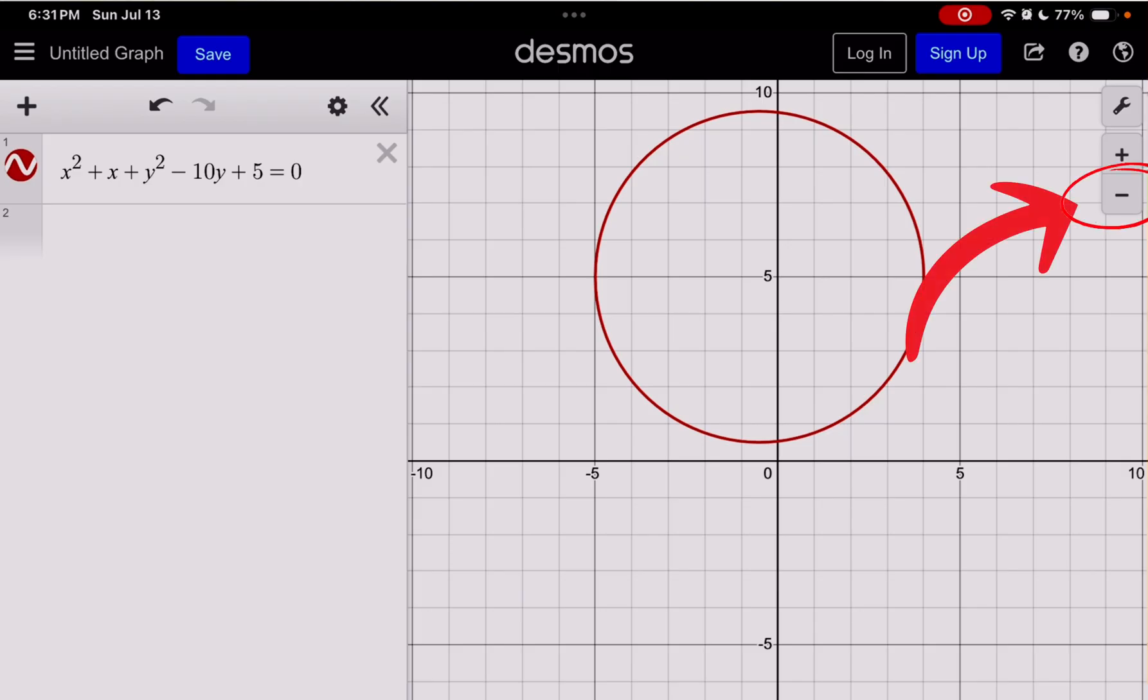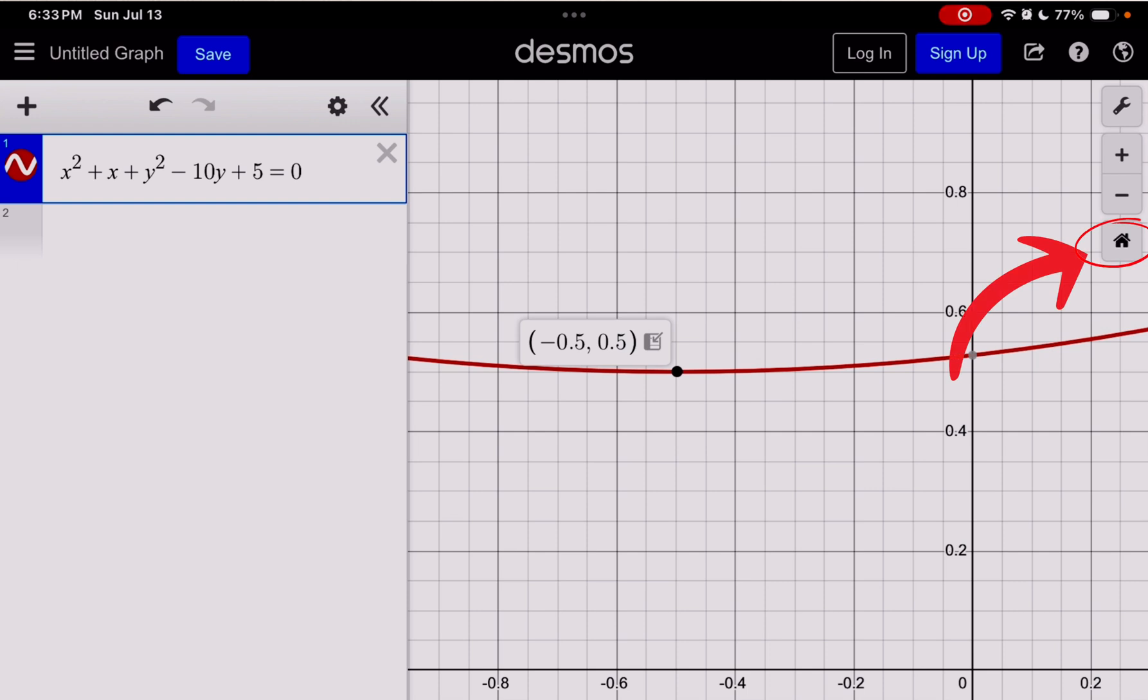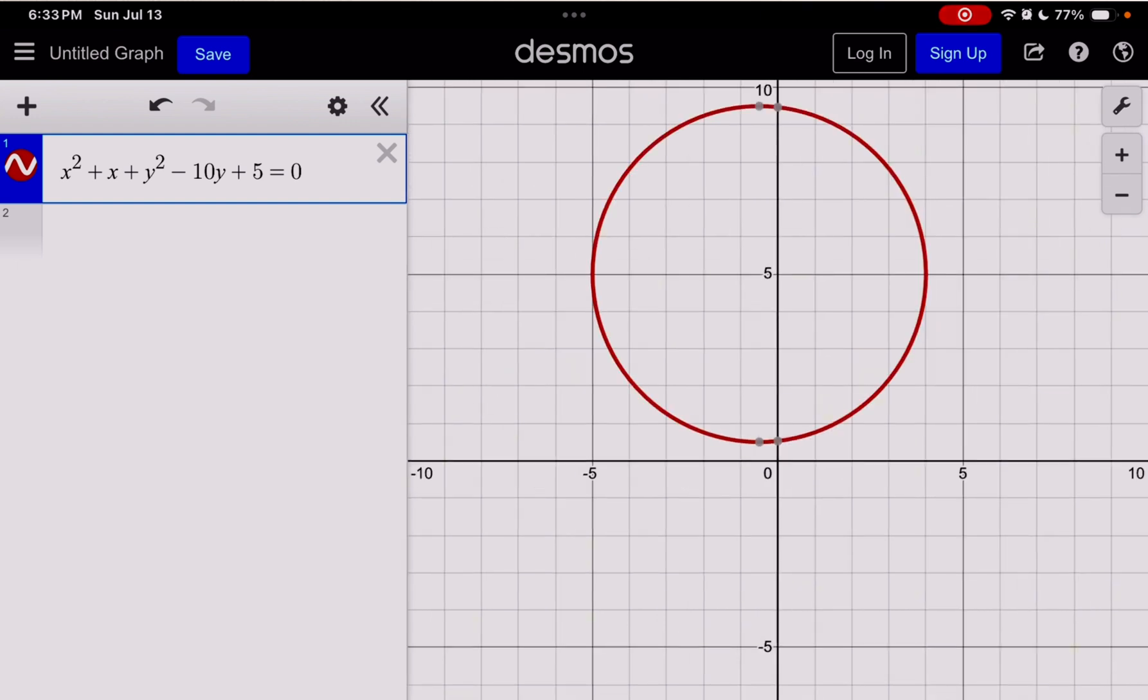The second point that I wanted to talk about is the SAT will sometimes make their graphs extremely small, extremely large, or simply out of view when you first graph it. If you graph something and you immediately don't see it, it might just be out of view. So press this minus button on the top right until you see it. If you press it around 10 times and it doesn't show up, then you probably did something wrong. Always use this home button to go back to the default view.